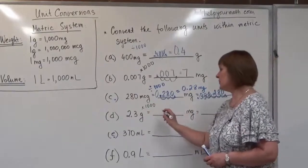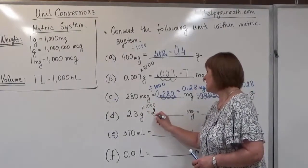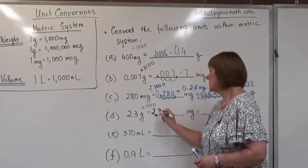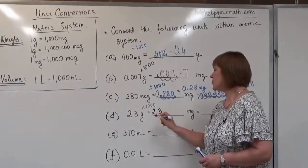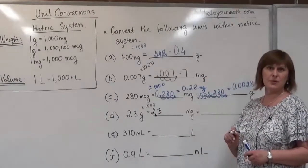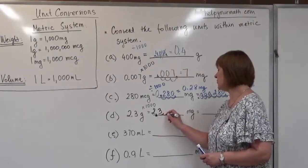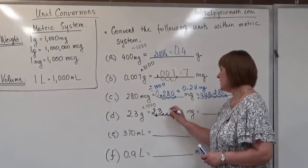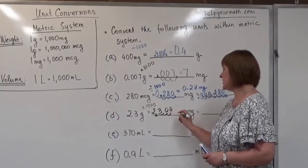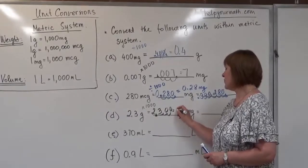We shift the decimal point: we drop the old decimal point in 2.3, count three places to the right, and insert two extra zeros, giving us 2,300 milligrams.